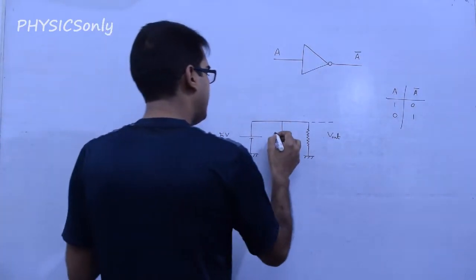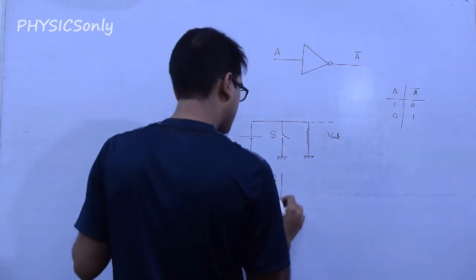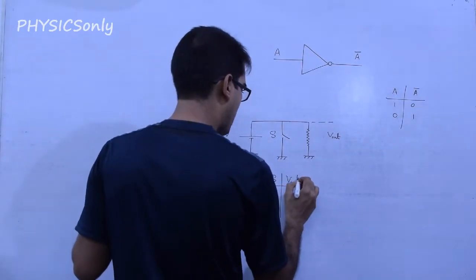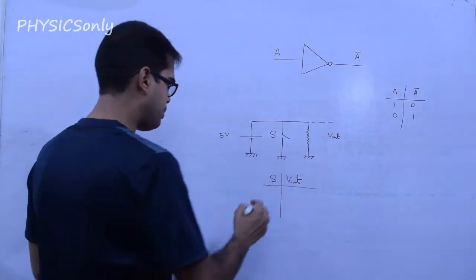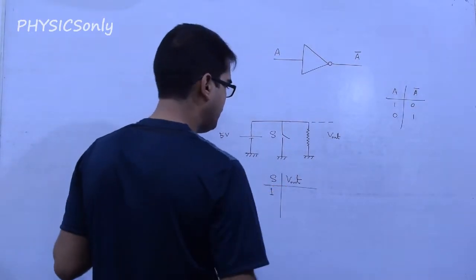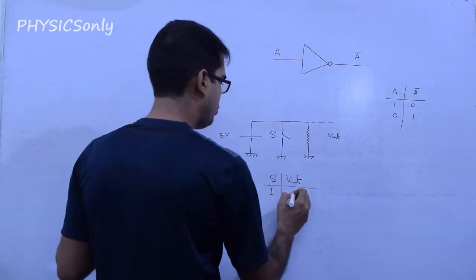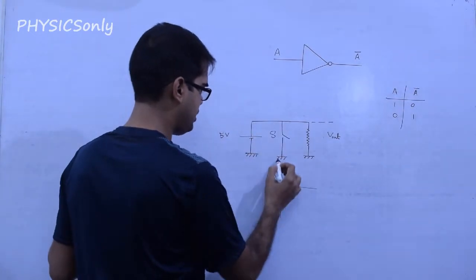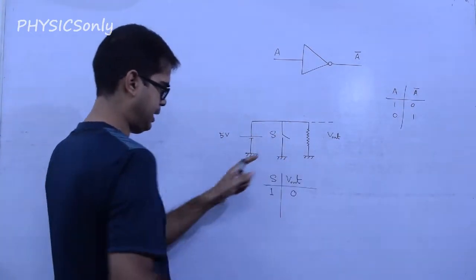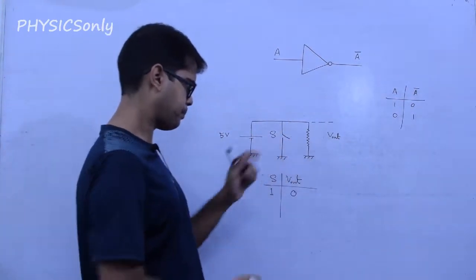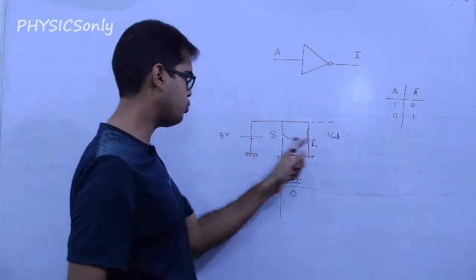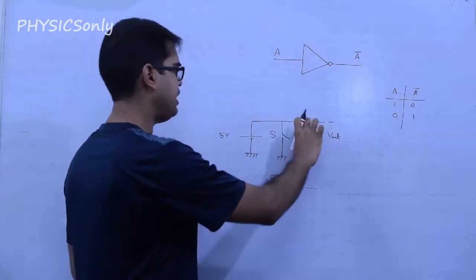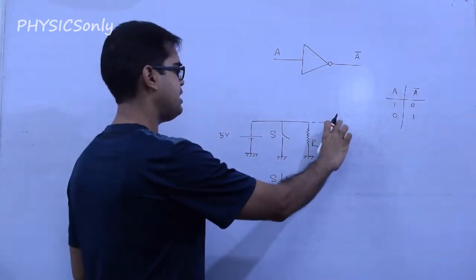So this switch is in the ON state, corresponding to logic 1. Then Vout is 0. What is the total current? Maximum current flows through the switch. So there is no resistance — you can take the current as shorted. So the current through RC will be maximum and Vout will be 0.